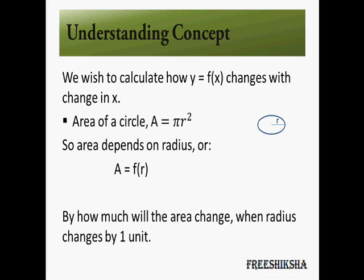To start with, let's assume that y is a function of x, so it's clear that y will change as x changes. For example, consider the area of a circle — it's pi r squared — and if the radius changes, the area will obviously change. What we are interested in is calculating by how much the area will change when the radius changes by one unit.